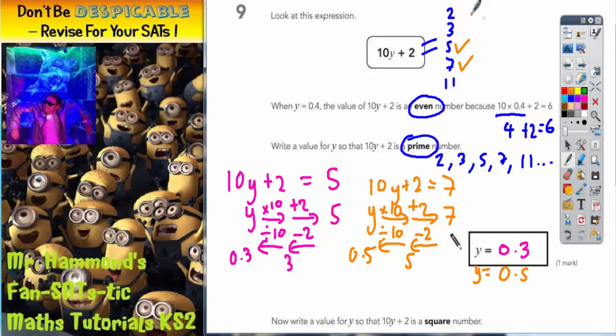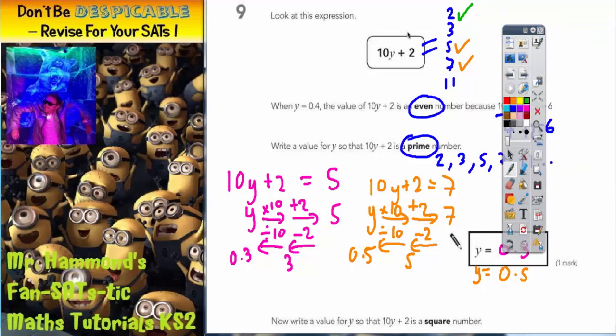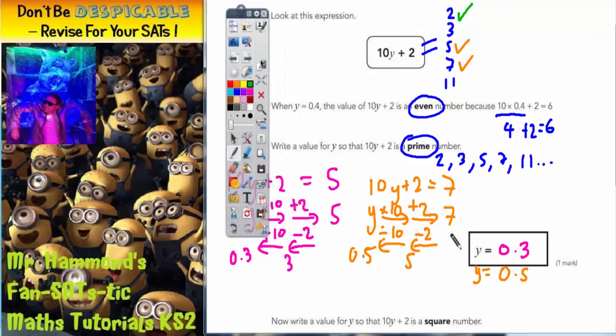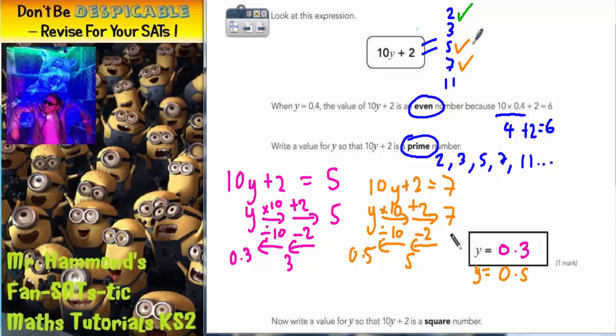One final example. We could have used 2, 3, or 11. Let's try and see what happens if we use 2. Now we are running out of space. So we'll just move this over here and make some extra space. So if we said that 10y plus 2 was equal to 2 because that's also a prime number, then y times by 10 add 2 out pops 2.